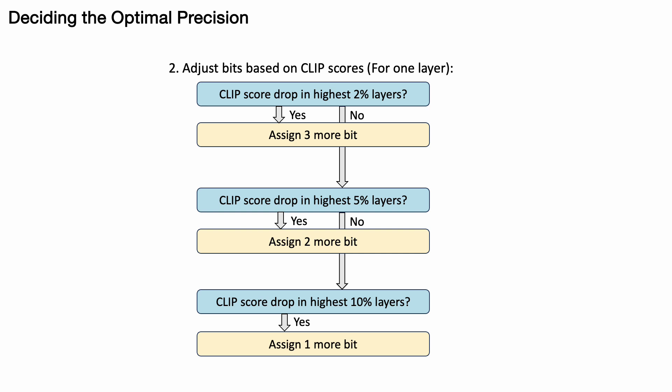Next, we consider using the 3-bit clip score drop as the second metric. For each layer, if the clip score drop is within the highest 2%, we assign an additional 3 bits to this layer. For layers with clip score drops in the highest 5% and 10%, we assign 2 bits and 1 bit, respectively. After this step, we get our final mixed precision recipe.